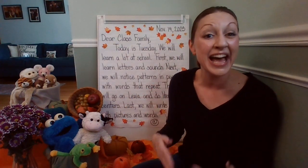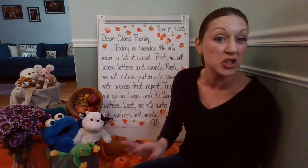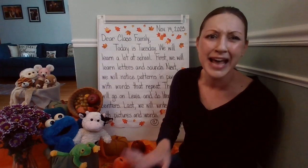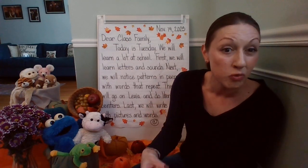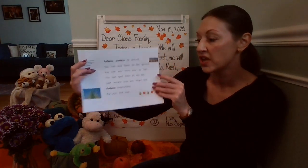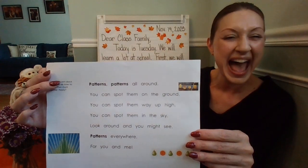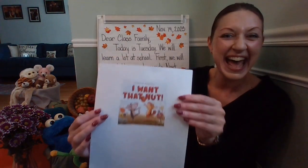Writers can write with repetition, and poems can have different parts that repeat. We'll be looking at a lot of different things this school year, especially nursery rhymes, books, poems, and other things to see that repetition, because we use repetition in reading, writing, and also in math. We're going to look back at this poem: 'Patterns, patterns all around. You can spot them on the ground. You can spot them way up high. You can spot them in the sky. Look around and you might see patterns everywhere for you and me.' We're also going to look back at this book: 'I Want That Nut.'